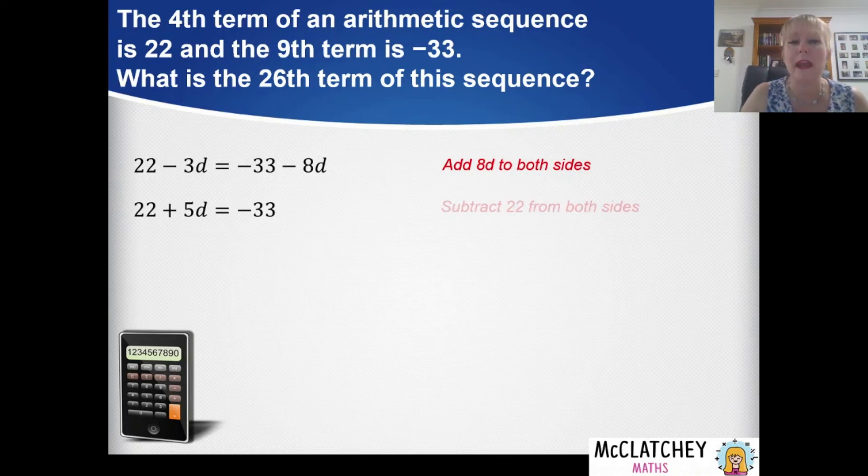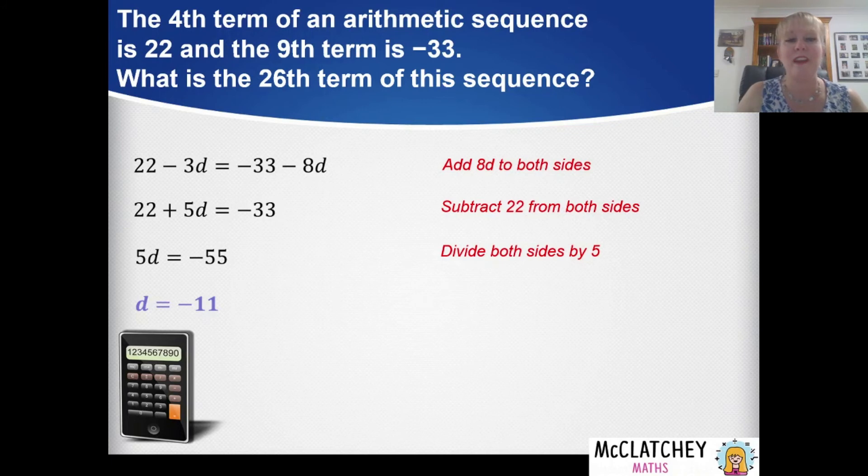Now we're going to subtract 22 from both sides and we end up with 5d equals negative 55. If we now divide both sides by 5 we're going to find that d's value is negative 11. We're halfway there. We've found our common difference.